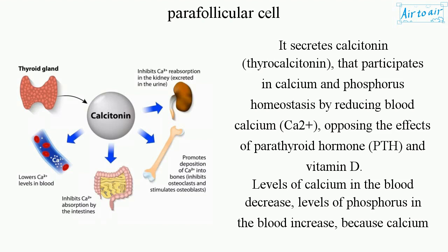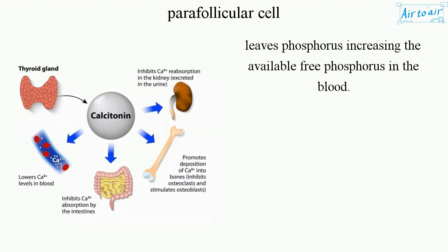Levels of calcium in the blood decrease. Levels of phosphorus in the blood increase because calcium leaves phosphorus, increasing the available free phosphorus in the blood.